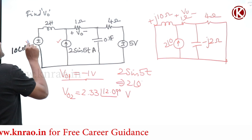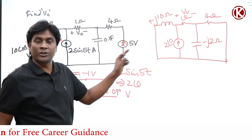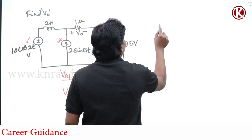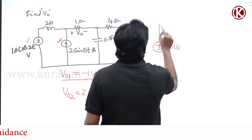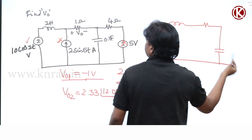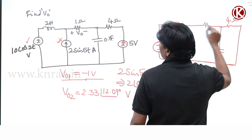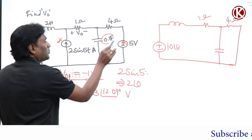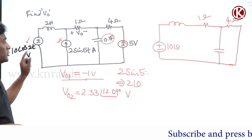Now consider the third source by removing the others — that means open circuit for the current source and short circuit for the voltage source. This is 10 cos 2t, treated as 10 at angle 0°. The circuit has inductance, resistance, capacitance, and resistance with a short circuit. So we have 4 ohm and 1 ohm.